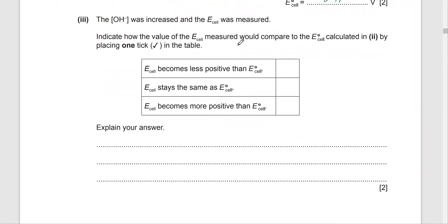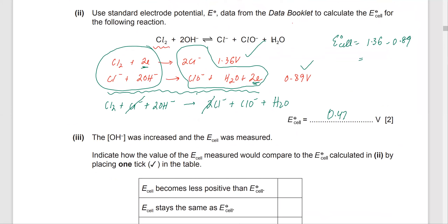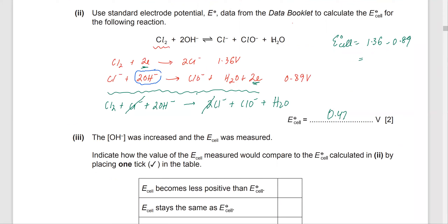The next part: the OH⁻ concentration was increased and the E cell was measured — how would the E cell compare to E0 cell? Our previous working is useful here. The question specifically asks about increasing OH⁻. If you increase the concentration of OH⁻ in this equilibrium, it's going to shift, producing more electrons, and this electrode potential will become more negative.